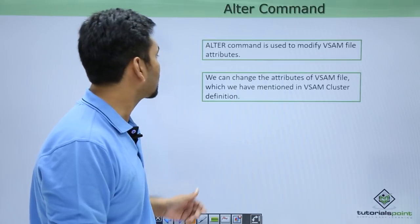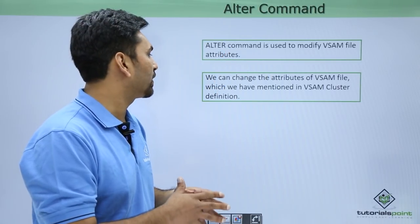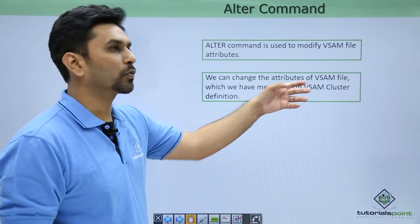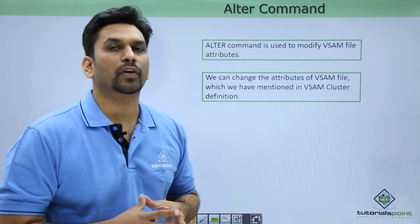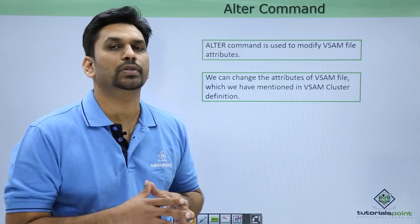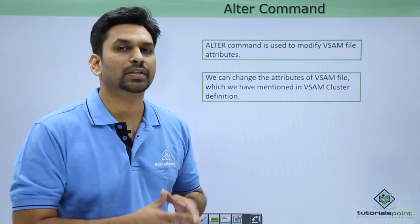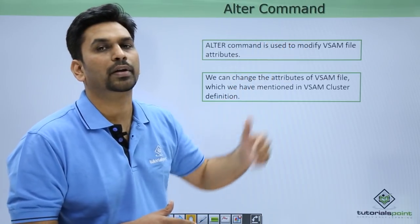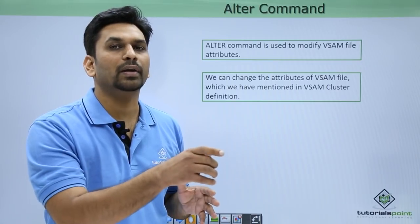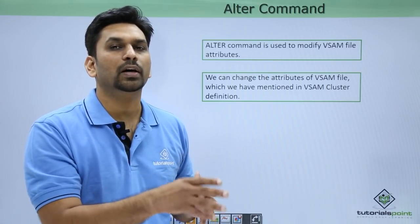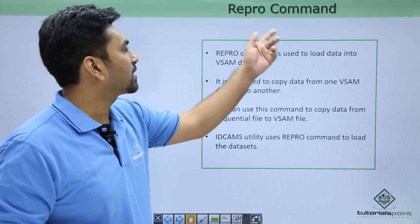The ALTER command is used to modify VSAM file attributes. We can change the attributes of a VSAM file which we have mentioned in the VSAM cluster definition. Suppose you have defined one VSAM cluster and now you want to change it — increase the size or rename it. This can be done using the ALTER command with the same IDCAMS utility. You mention the ALTER command, then the field you want to change in the main cluster.